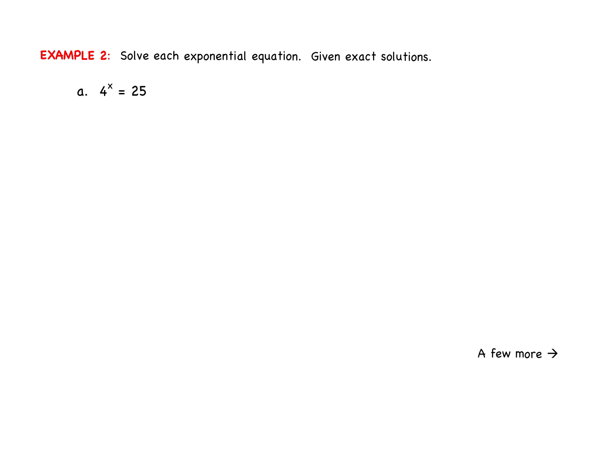Example 2. Solve each exponential equation and give exact solutions. Okay, so again, this looks very similar to the other problems we've done. We're going to ask ourselves, can we rewrite either side and/or both? Can we rewrite 4? Yes. 2 squared. So that 4, we're going to get 2 squared to the x. And 25, we can write as 5 squared. What issue do we run into here? Bases are not the same. Is there any way for us to get the bases to be the same here? Is there any way we can rewrite 4 in terms of 5 to some power, or 25 as 2 to some power? No.